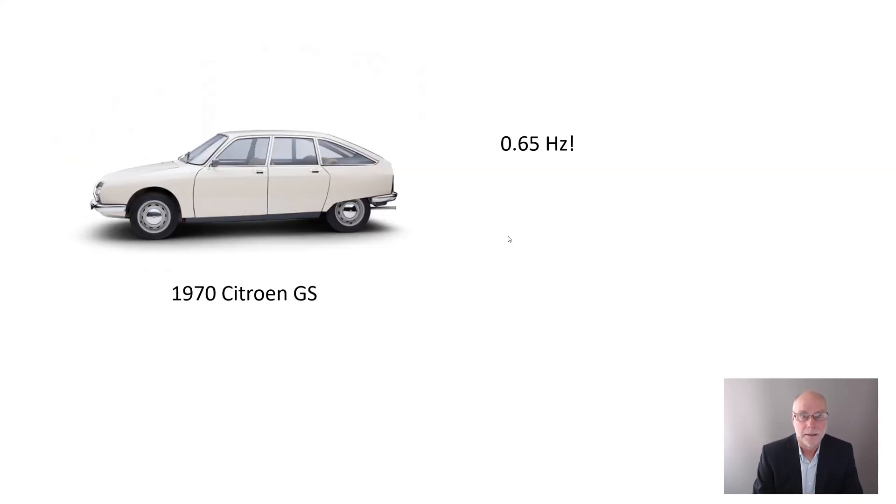And then we get to things like the hydropneumatic suspension of the 1970 Citroen GS. A similar sort of system to that introduced something like 20 years earlier in the DS. But look at the natural frequency in bump, 0.65 hertz.